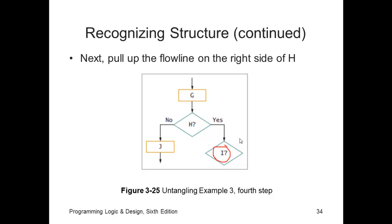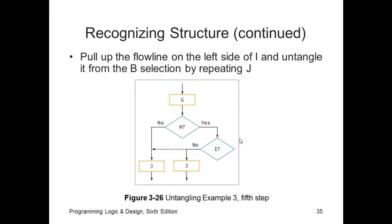Now if I evaluates to false or no, we want it to do J. Again, we don't want this flow arrow here because that would violate the rules of a single entry, single exit. So we create this decision structure. And yes, we write J twice in our flowchart. We're going to write J twice in our pseudocode.